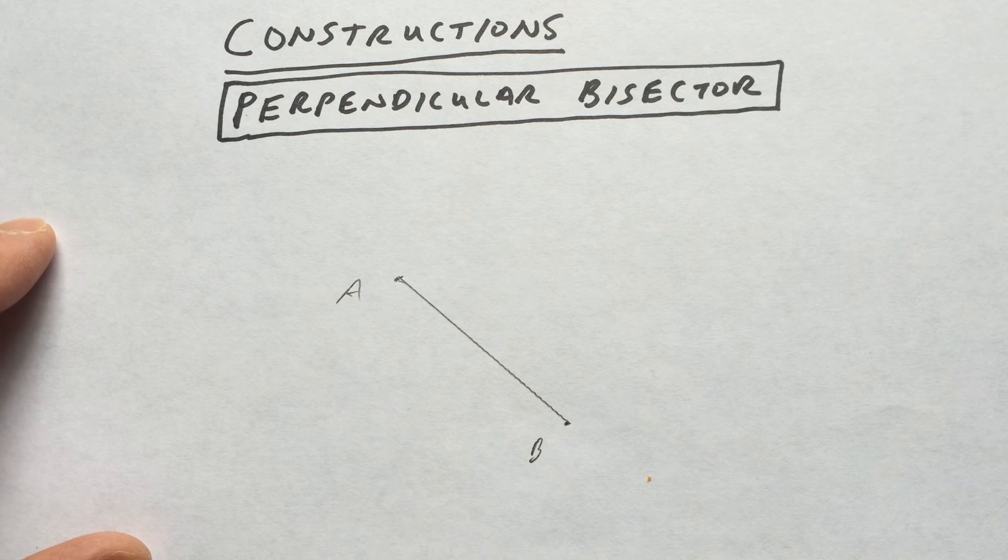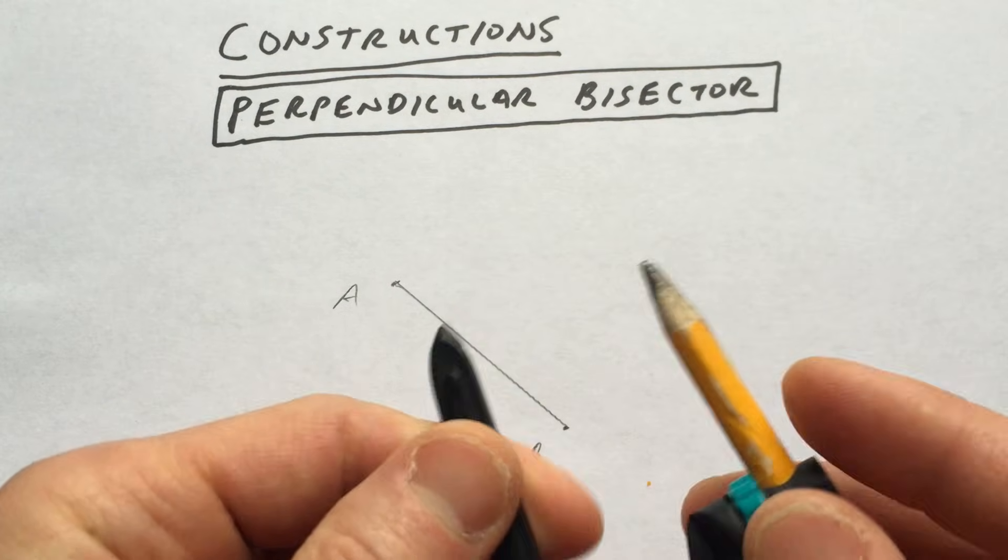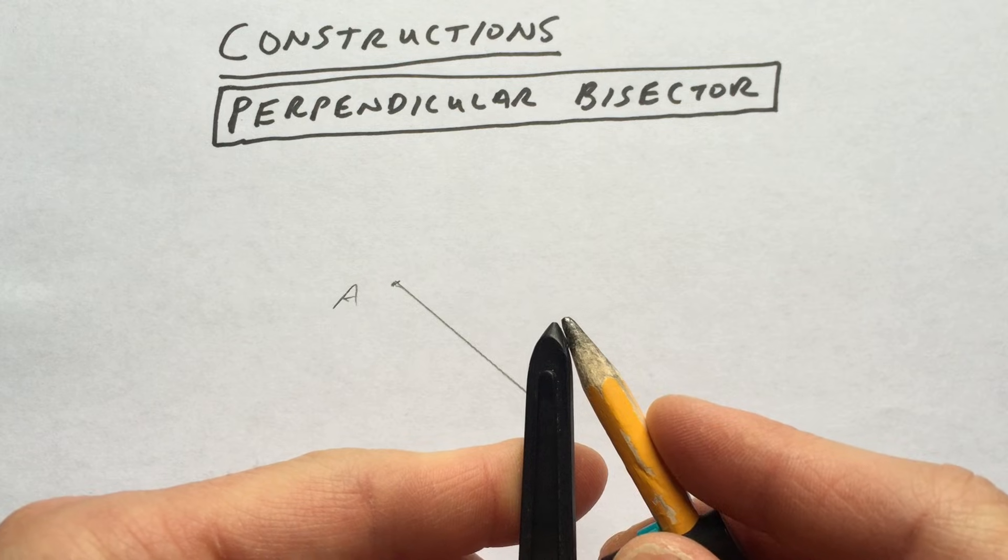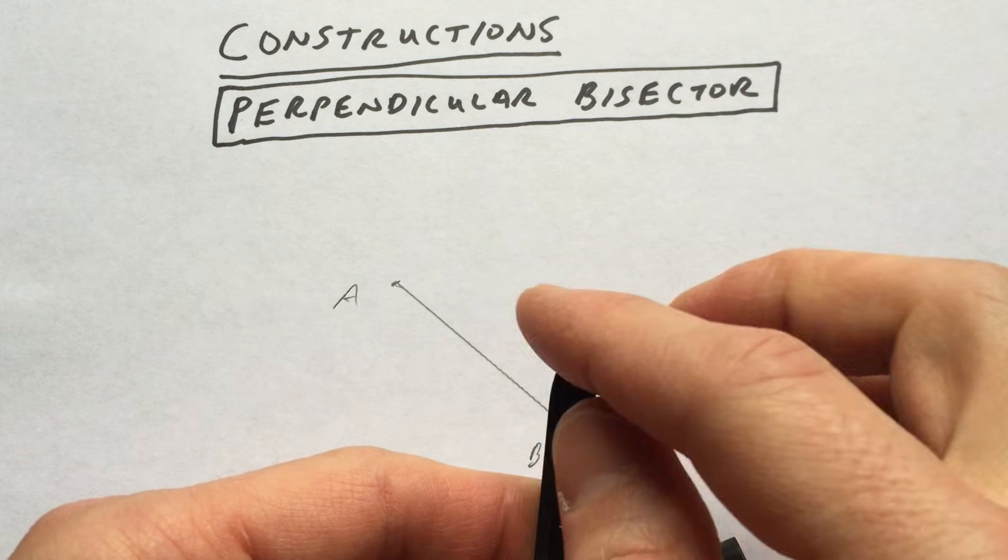So what we're going to do is we're going to take our compass. So this is just a basic compass here. What you want to make sure is that these two points come together. You don't want one to be down here and the other one to be up there. You want them to come together at the end.